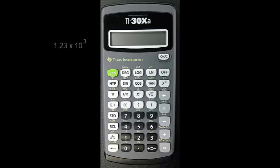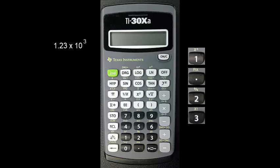Let's enter the number 1.23 times 10 to the third power. Press 1.23, then the EE button, and finally press the exponent, 3.